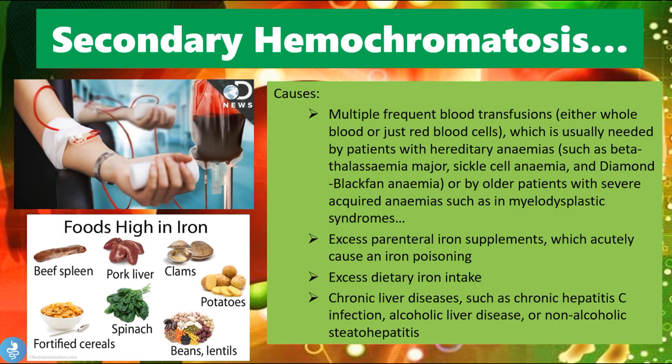Secondary hemochromatosis is acquired during life. One cause is multiple frequent blood transfusions — either whole blood or just red blood cells — which are usually needed by patients with hereditary anemias such as beta thalassemia major, sickle cell anemia, and Diamond-Blackfan anemia, or by older patients with severe acquired anemias such as myelodysplastic syndromes. Too many blood transfusions in patients with anemias can cause iron overload and lead to hemochromatosis.